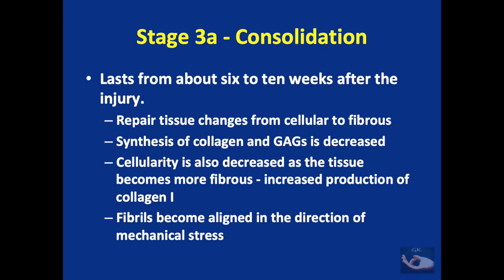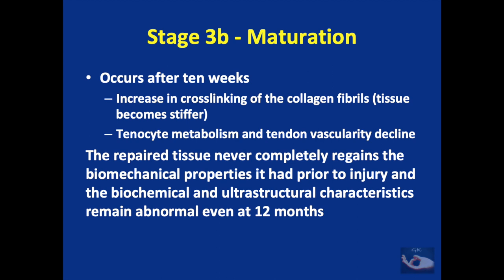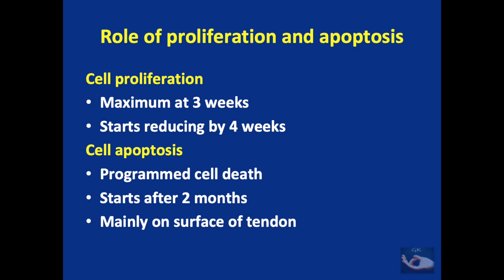The maturation stage typically occurs after 10 weeks. There is an increase in cross-linking of collagen fibrils — the tissue becomes stiffer — and tenocyte metabolism and tendon vascularity decline. The repair tissue never completely regains the biomechanical properties it had prior to injury, and biochemical and ultrastructural characteristics remain abnormal even at 12 months following injury. Two processes occur simultaneously: cell proliferation, which reaches a maximum at 3 weeks and starts reducing by 4 weeks, and apoptosis — programmed cell death — which starts after 2 months, mainly on the surface of the tendon, leading to tendon remodeling.